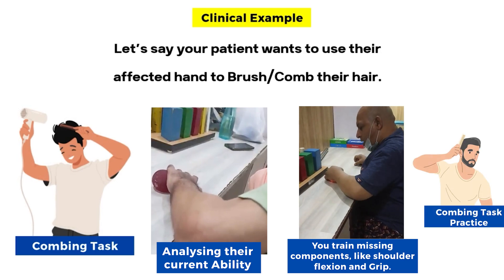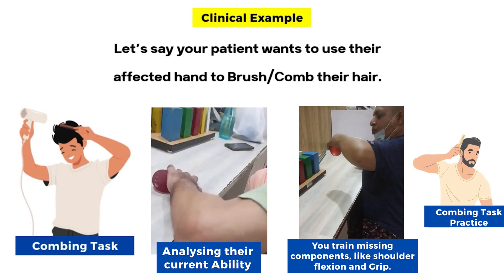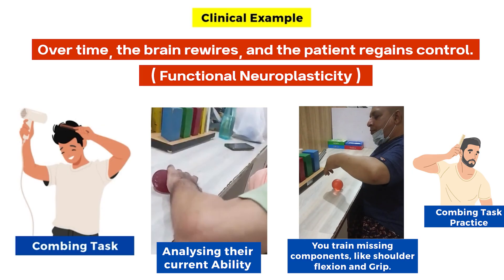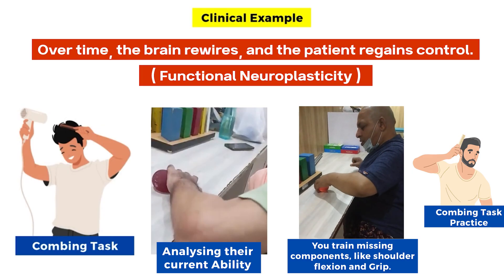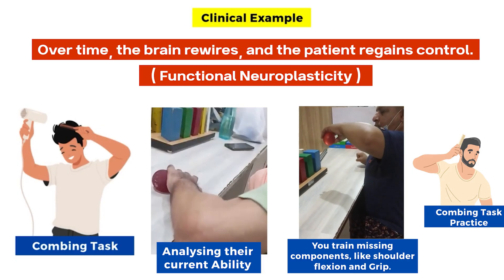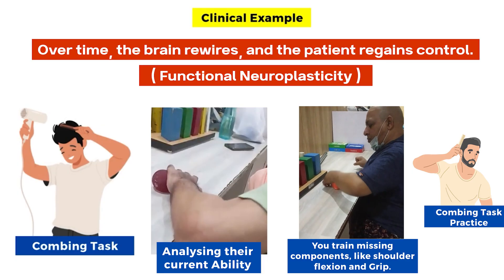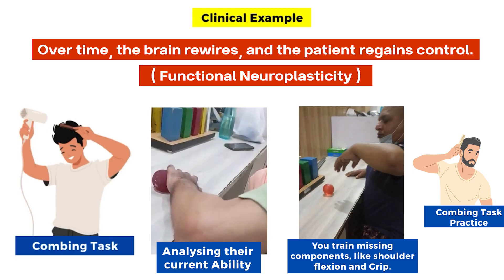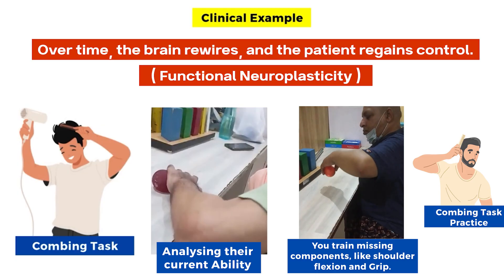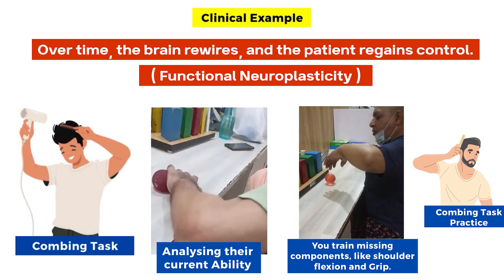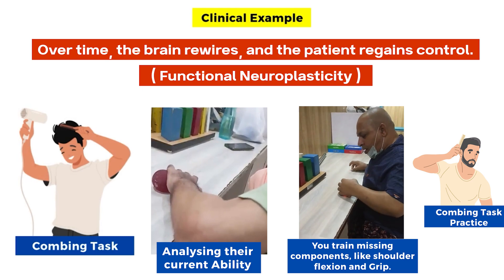Then you practice the full task repeatedly with feedback. Over time, the brain rewires and the patient regains control. It's not just repetition — it's purposeful, progressive, and brain-driven movement. That's why it works, and that's why task-specific rehab is essential in stroke and neurocases. You are finding the missing component first, training the missing component, and integrating the learning into a functional task. This leads to functional neuroplasticity.